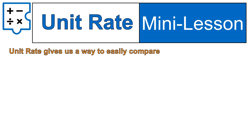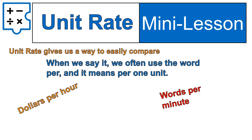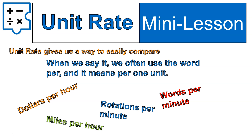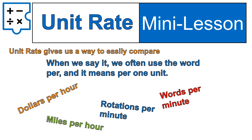Unit rate is what gives us a way to easily compare different things. When we say it, we often use the word "per," and it means per one unit. For example, we might say dollars per hour, which means how many dollars for every one hour. We might say words per minute — how many words can you type in one minute? Rotations per minute. Miles per hour. Those are just some examples of unit rate. You see that word "per" — it means per one minute, hour, whatever.